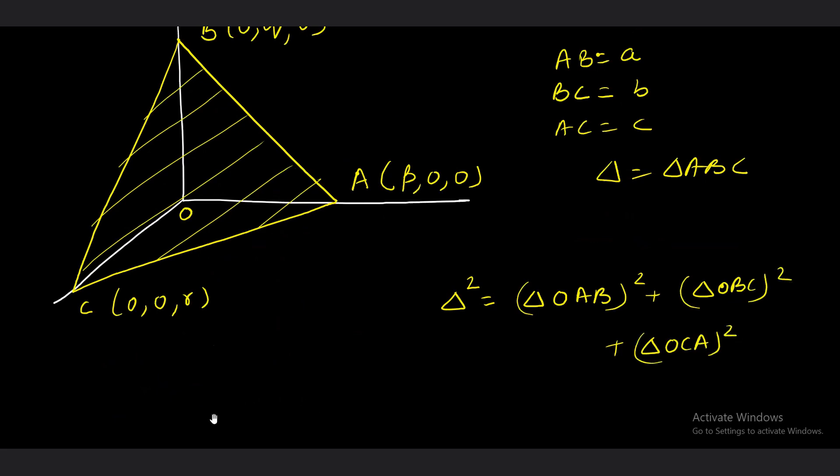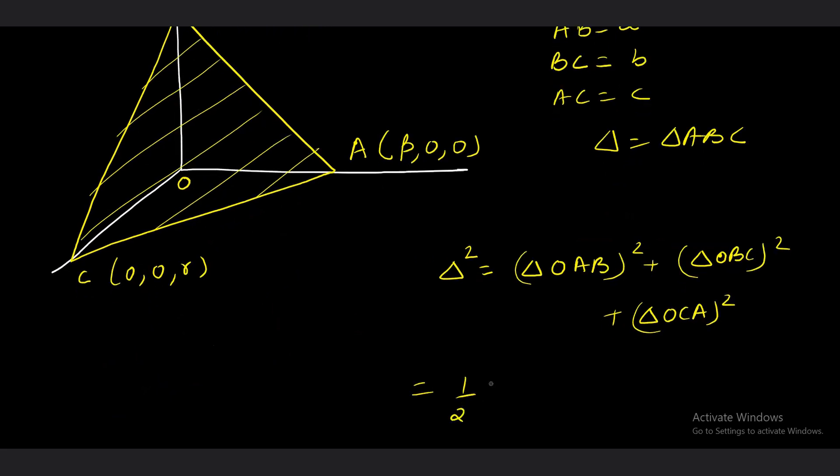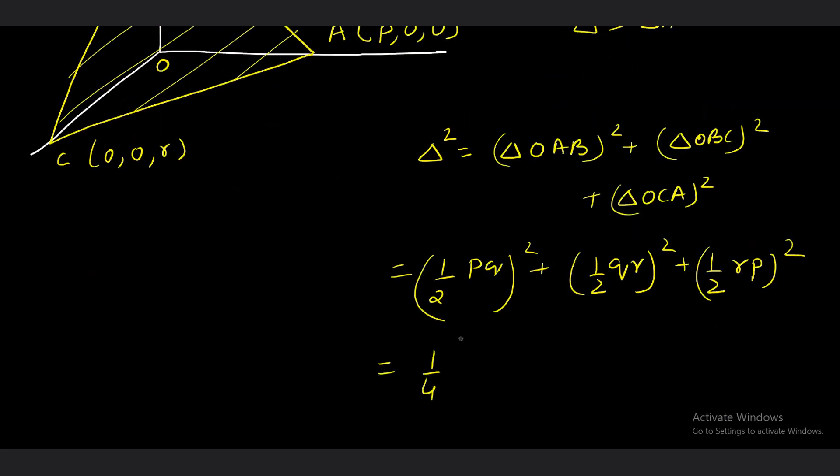Can we calculate these areas? Absolutely. This one will be (1/2 pq)². Then we have (1/2 qr)² and (1/2 rp)². You can take 1/4 common, left with p²q² + q²r² + r²p². So v(a+b+c)/2 equals 1/4(p²q² + q²r² + r²p²). p, q, r are constants, so this is the answer.